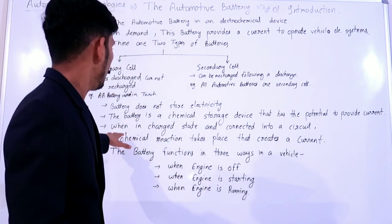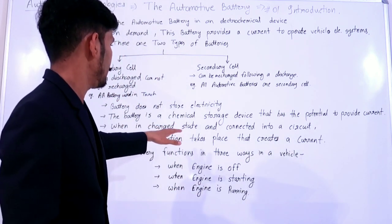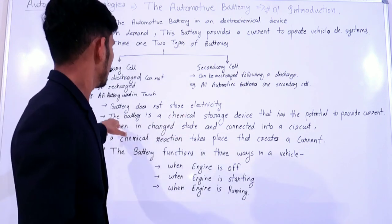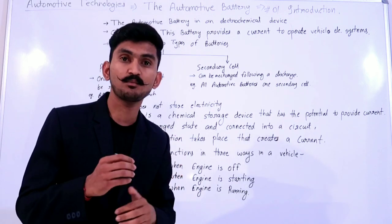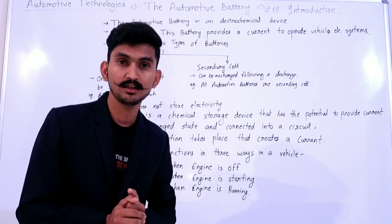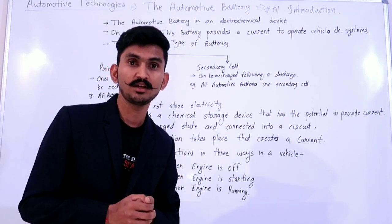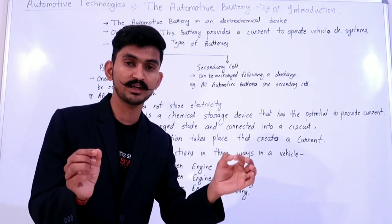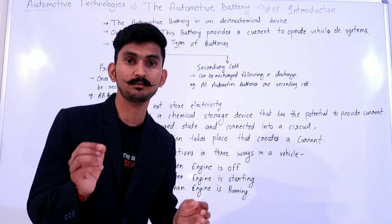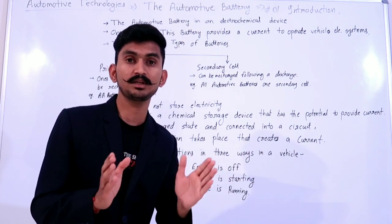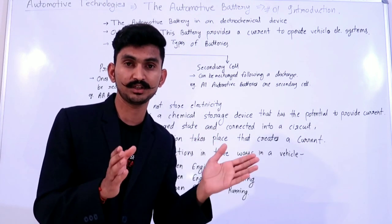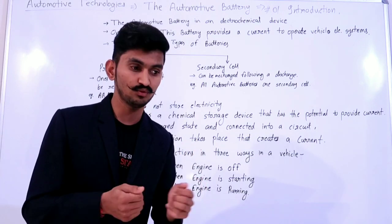The point is: battery is a chemical storage device that has a potential to provide current. What is potential? Potential is the potential difference between the positive and negative terminal of the battery.